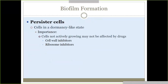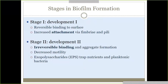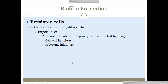Those are the five stages to know. Another important term is persister cells — these are organisms that persist and can survive, sometimes in a dormancy-like state. They are not really affected by drugs or antibiotics, which is why they're called persisters. They just persist.